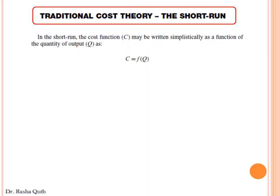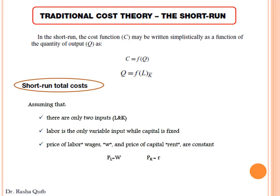In the short run, costs are a function of output, and output is a function of labor which is the only variable factor of production, and capital is constant. In order to know the total cost function in the short run, we put some assumptions: we have only two inputs — labor and capital; labor is the only variable factor of production; capital is constant; and the price of labor (wages) and the price of capital (rents) are constant.